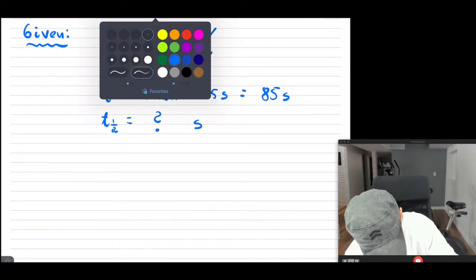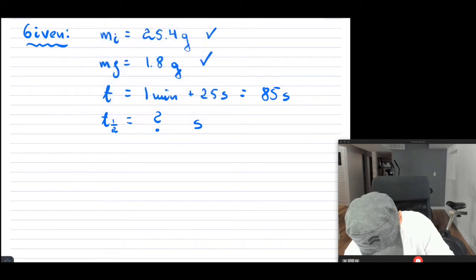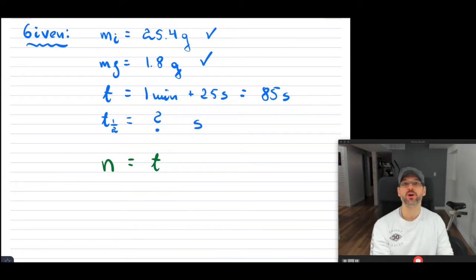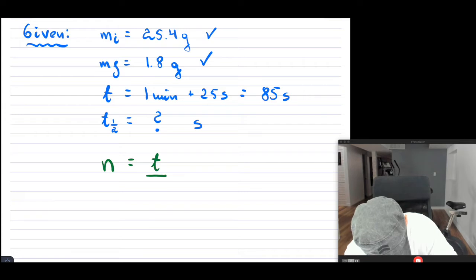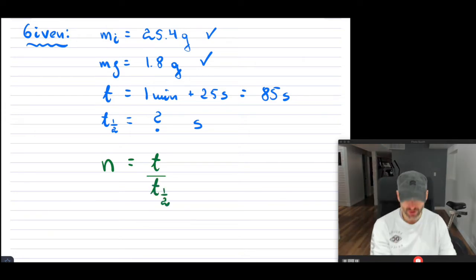So for those who may have forgotten, your N is equal to, meaning N is just the number of half-life periods. And that is just your total time divided by however long it takes for one half-life to pass.